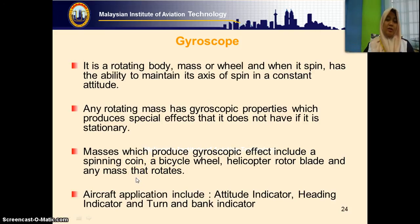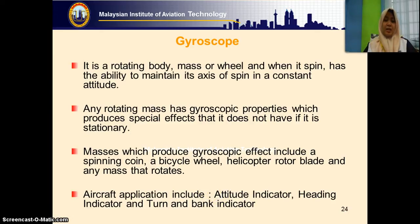We are more concerned with aircraft applications. Normally, you can see gyroscopes inside the attitude indicator, heading indicator, and also the turn and bank indicator. The attitude indicator provides pitch — meaning nose up and nose down indication — and also rolling indication: roll to the left and roll to the right.